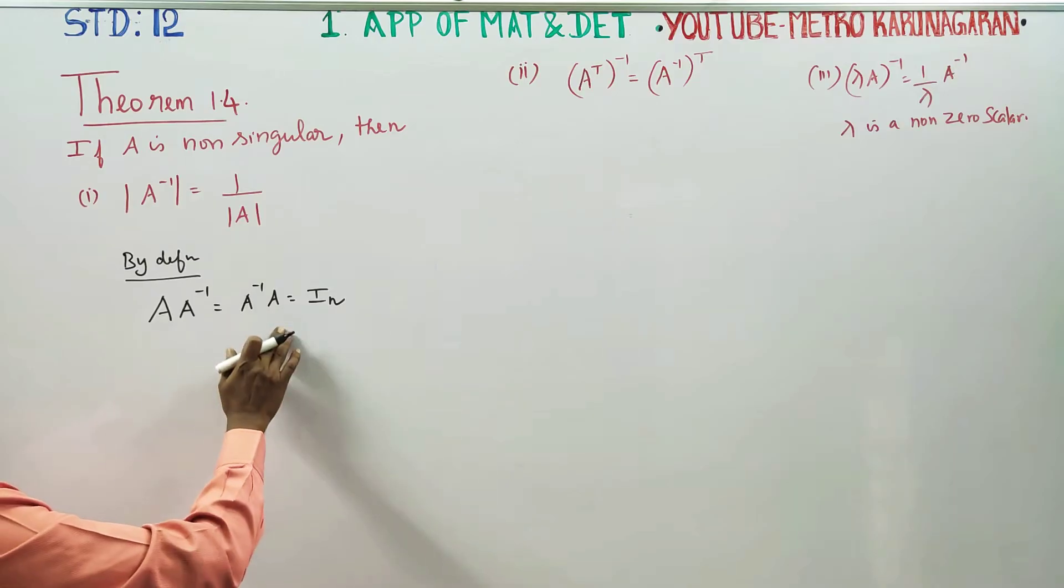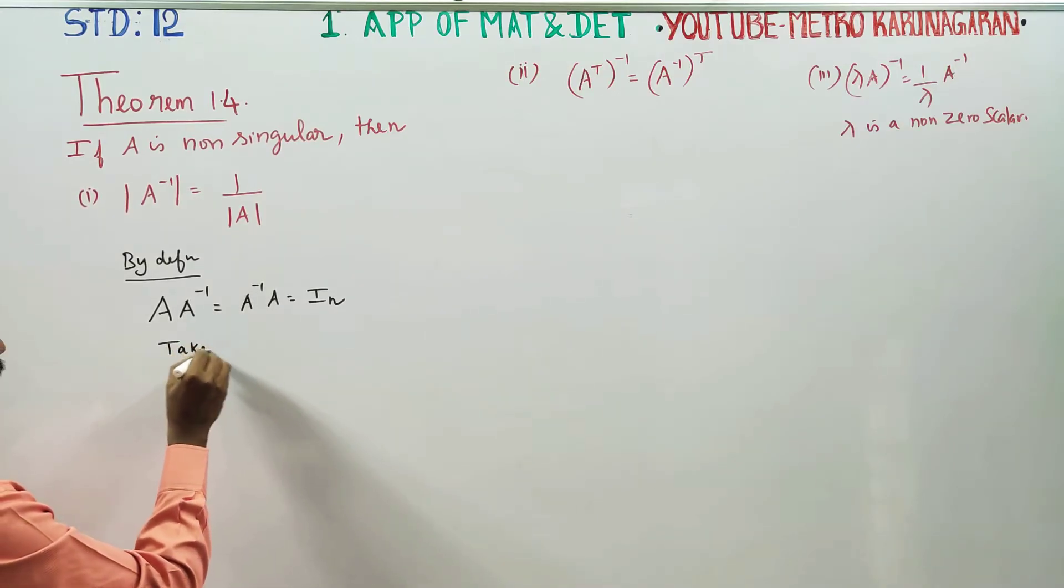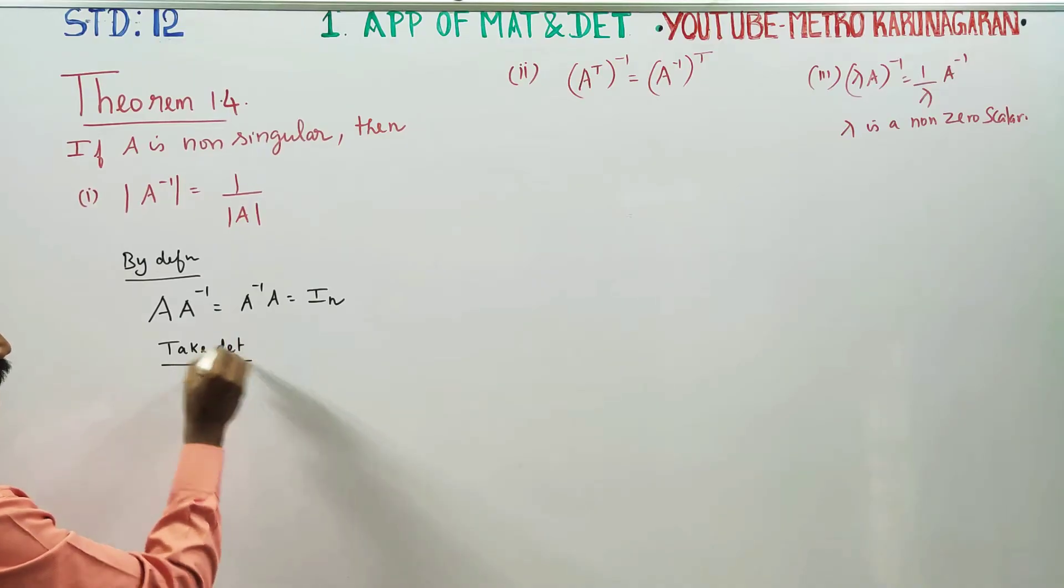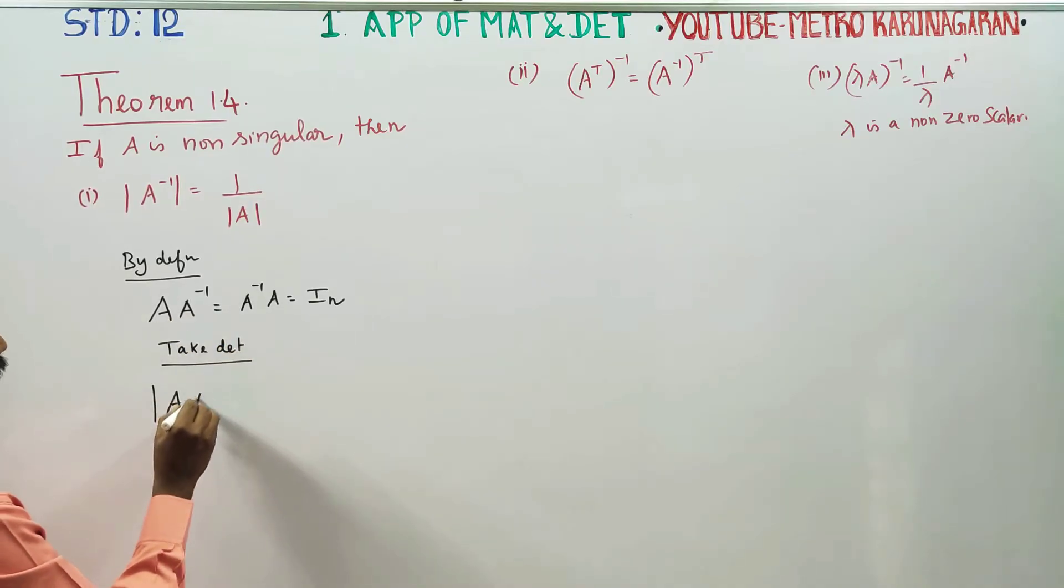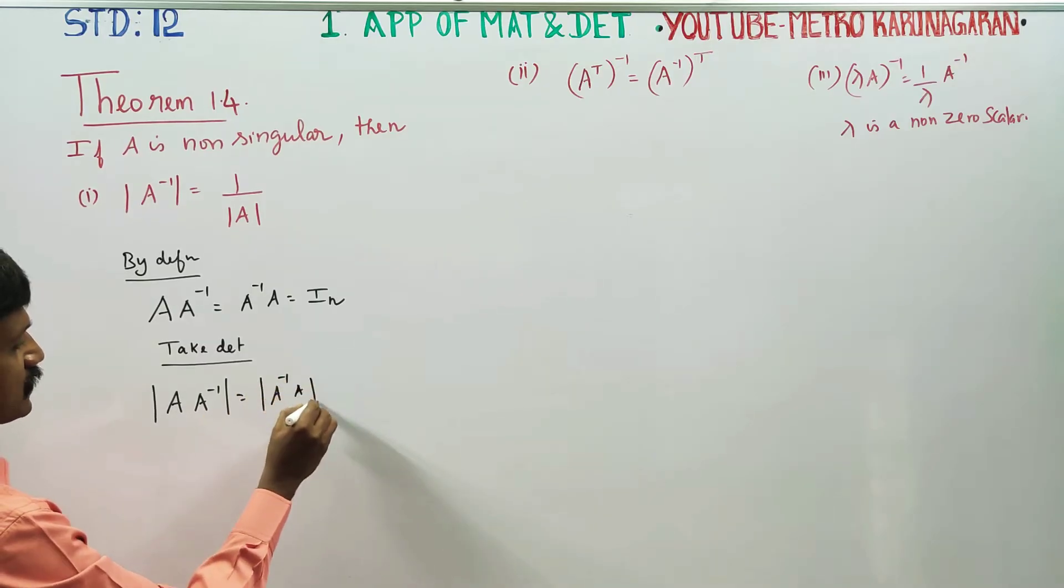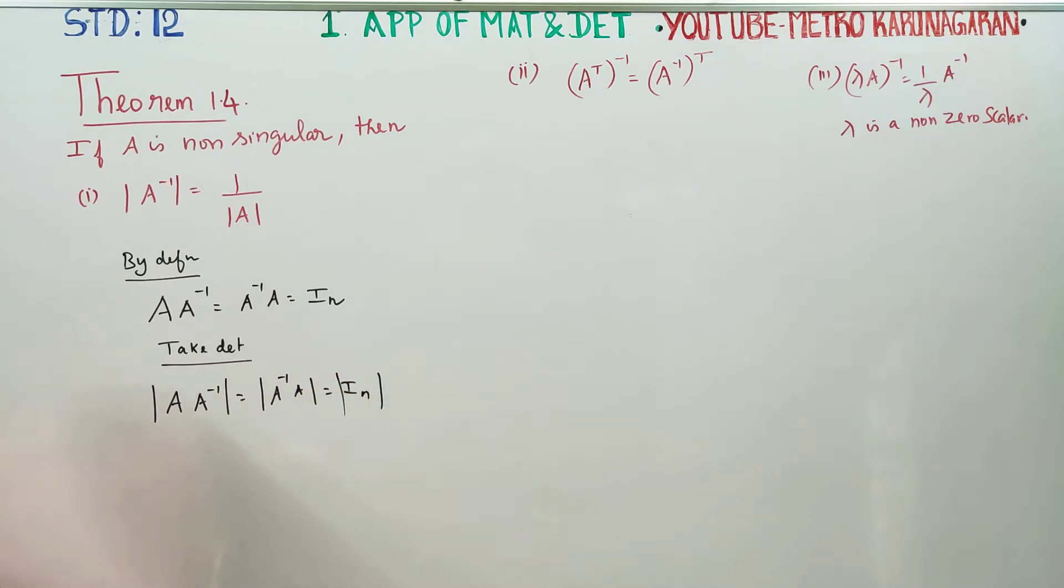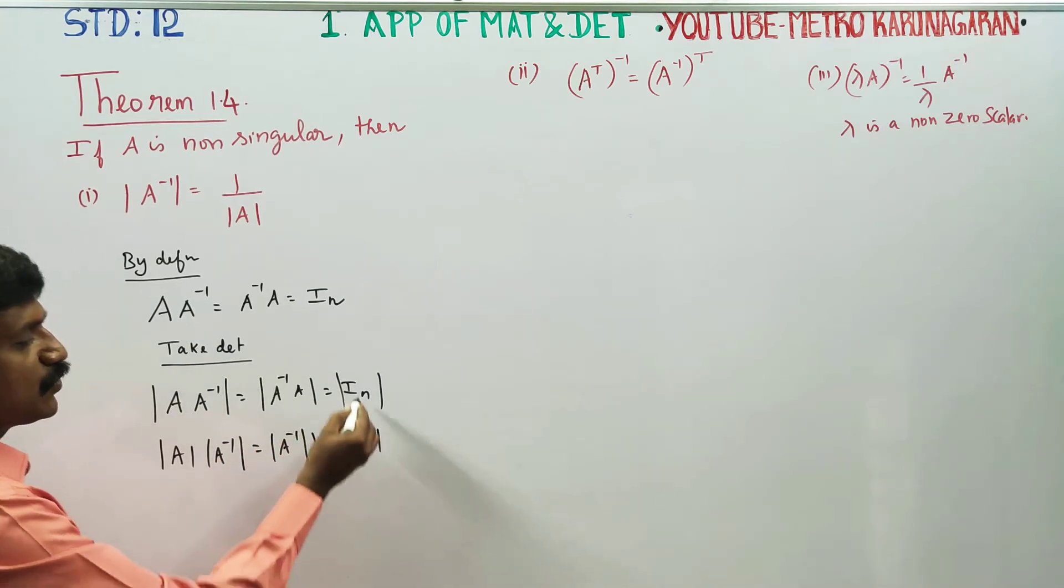Take determinant for all the terms. From chapter one on matrix determinants, we know that the determinant of a product equals the product of determinants. So determinant of A times determinant of A inverse equals determinant of I_n, which equals 1.